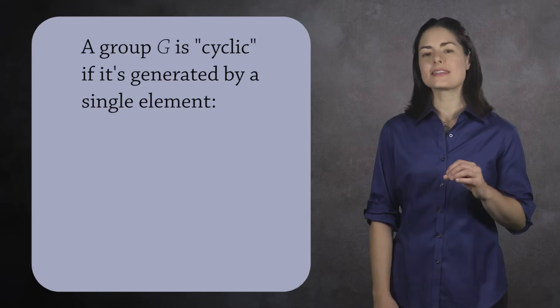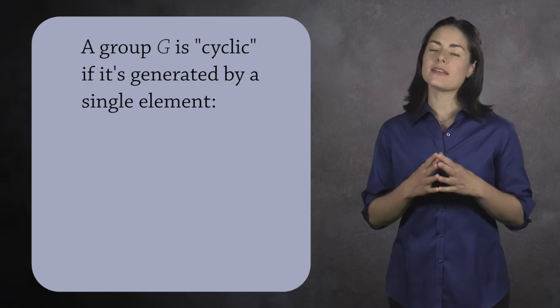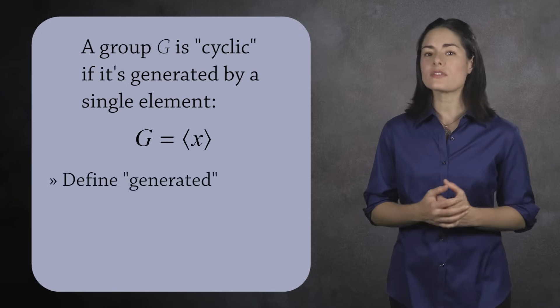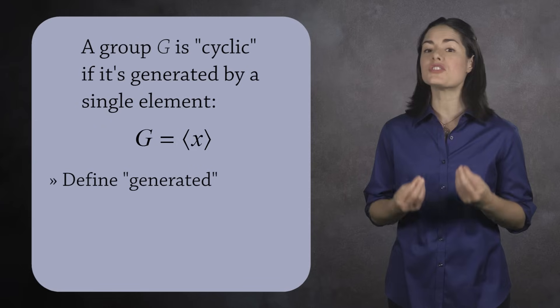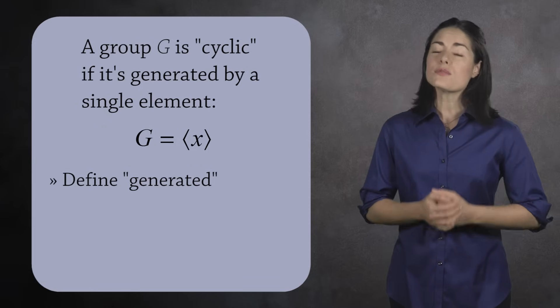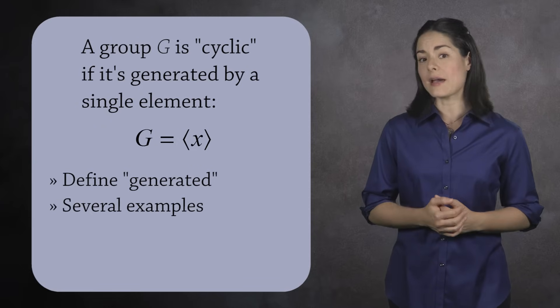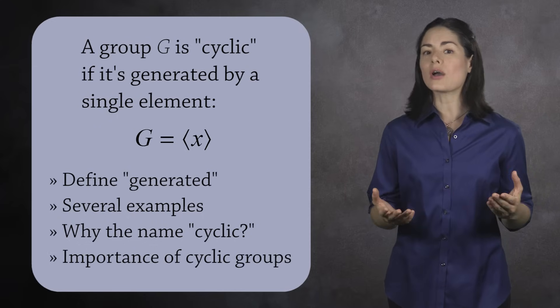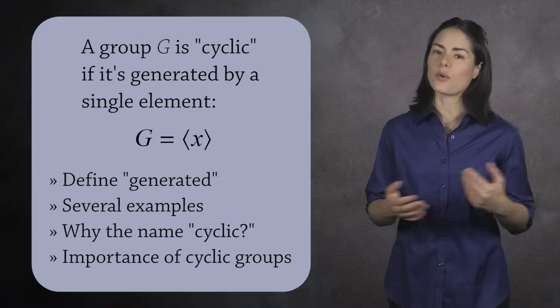We say a group G is a cyclic group if it can be generated by a single element. To understand this definition and notation, we must first explain what it means for a group to be generated by an element. Once we've done that, we'll give several examples, explain why the word cyclic was chosen for this definition, and then finally talk about why these types of groups are so important.